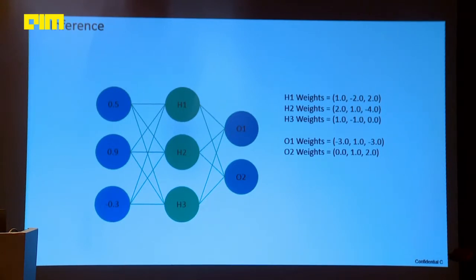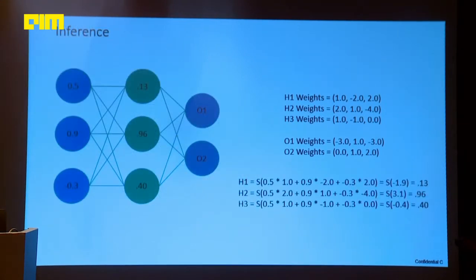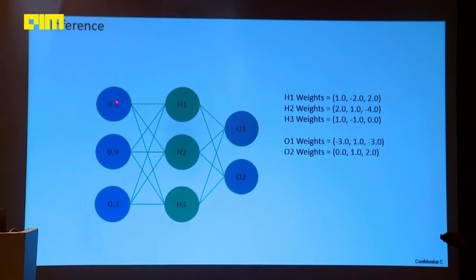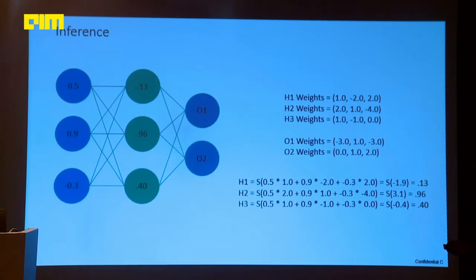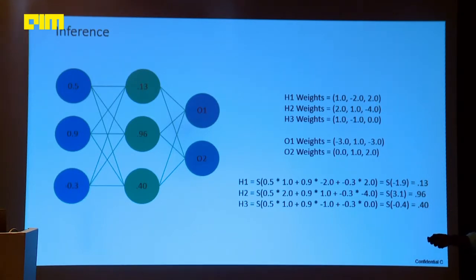Now I am going to compute the value of H1. Basically: 0.5 times the respective weight value of 1, plus 0.9 times -2, plus -0.3 times 2. The summed-up value gives -1.9, which goes to the activation function, and the result will be 0.13 — this value will be assigned to H1. So basically there are two vectors: one is an input vector and the other one is a weight vector. You do a dot product and the sum goes to the activation.